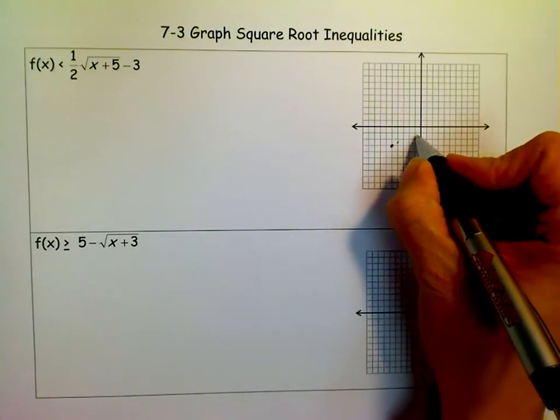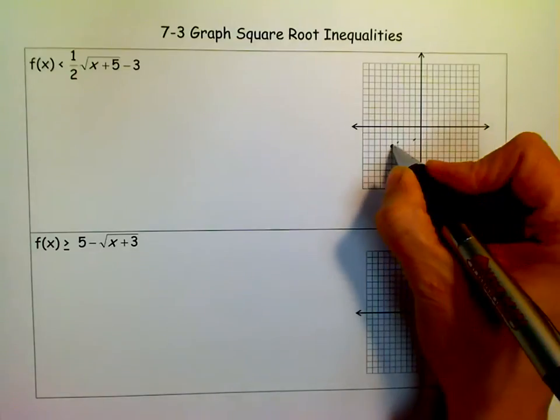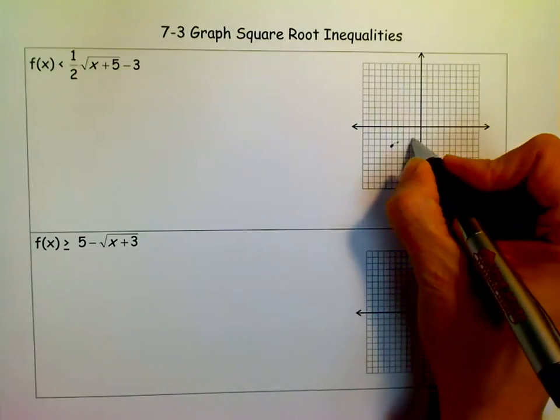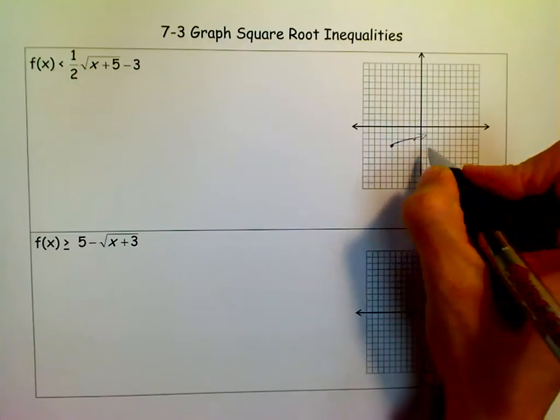And instead of going over four and up two, I would cut that in half. So it's going to kind of go up not as speedily as the other one.